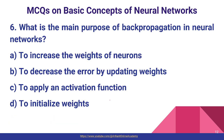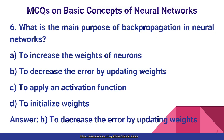Question number six: what is the main purpose of backpropagation in a neural network? We want to reduce the error by updating the weights with the help of biases and activation functions. So to decrease the error by updating weights, option B is the most suitable answer.